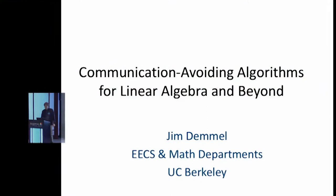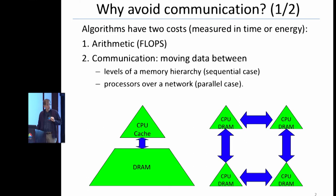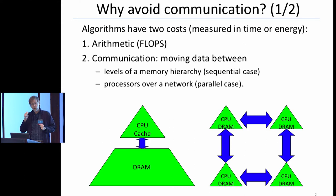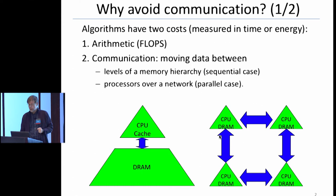I want to talk about communication-avoiding algorithms, but before I tell you about avoiding communication, I have to tell you what communication is. We've been talking about it all day, but I want a formal model so I can prove my algorithms are actually optimal. My algorithms are going to have two costs, measured in either time or energy — arithmetic flops and moving data — between different levels of a memory hierarchy or between different processors over a network.